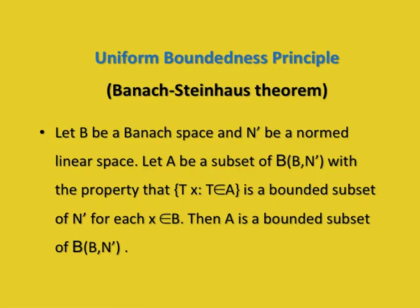The Uniform Boundedness Principle states that if B is a Banach space and N' is a normed linear space, and A is a subset of B(B, N'), with the property that the set {Tx : T belongs to A} is a bounded subset of N' for each x belonging to B, then A is a bounded subset of B(B, N'). More concisely, if X is Banach, then pointwise boundedness implies uniform boundedness.